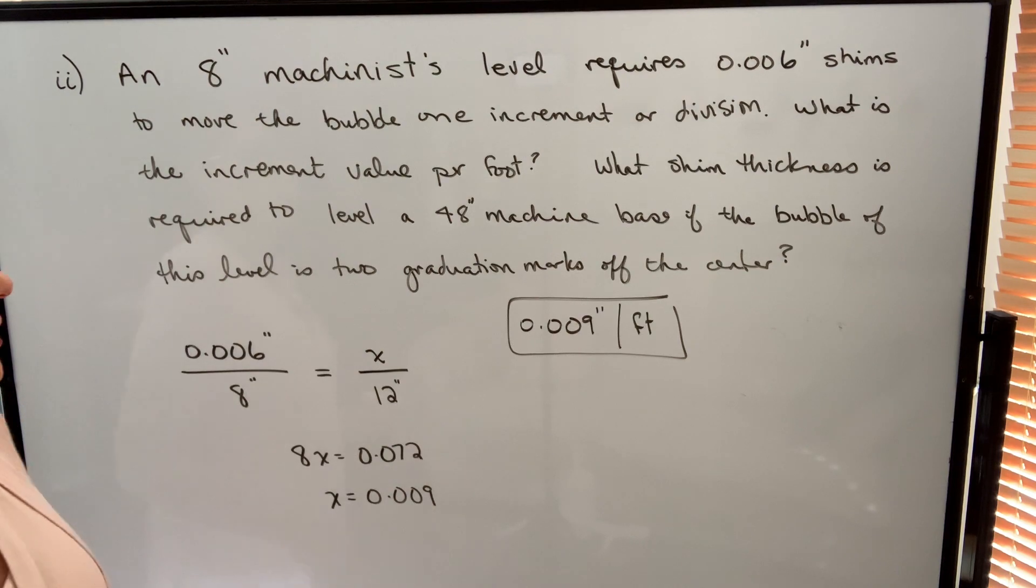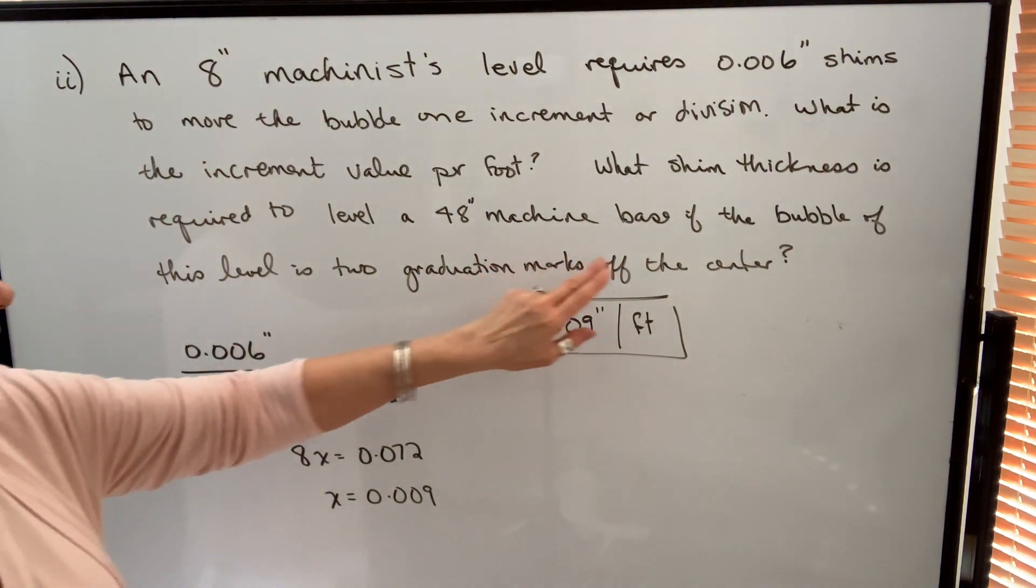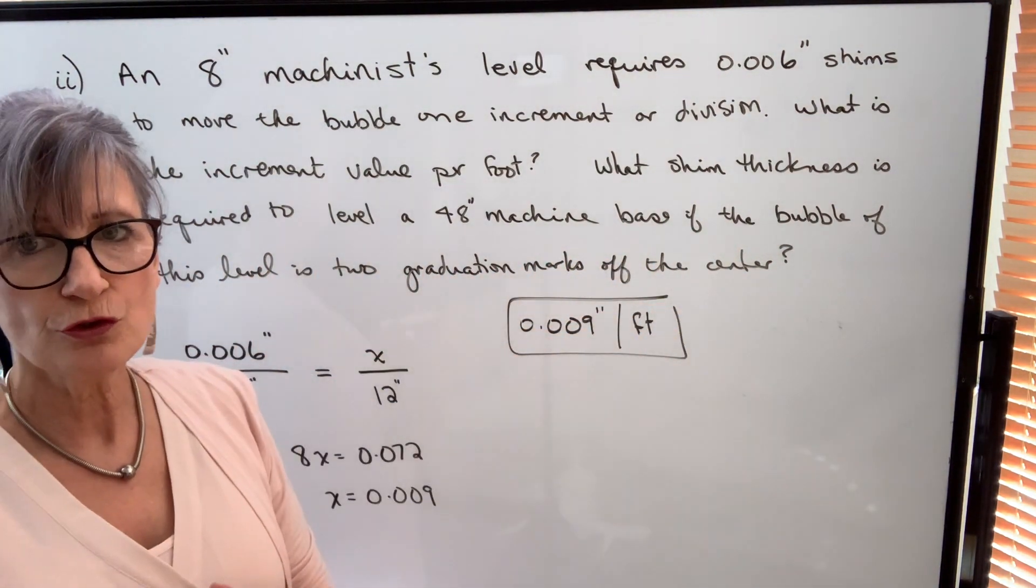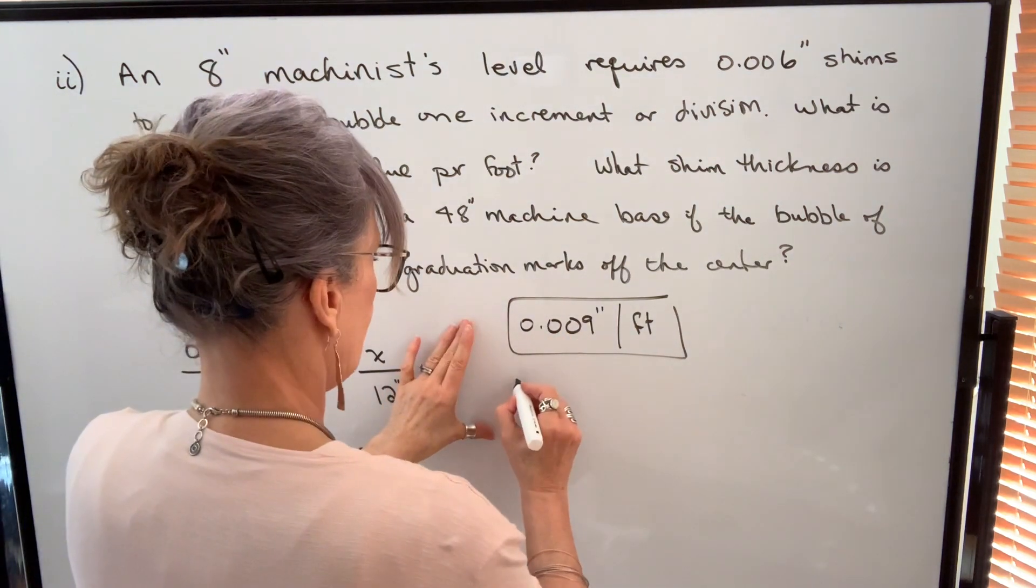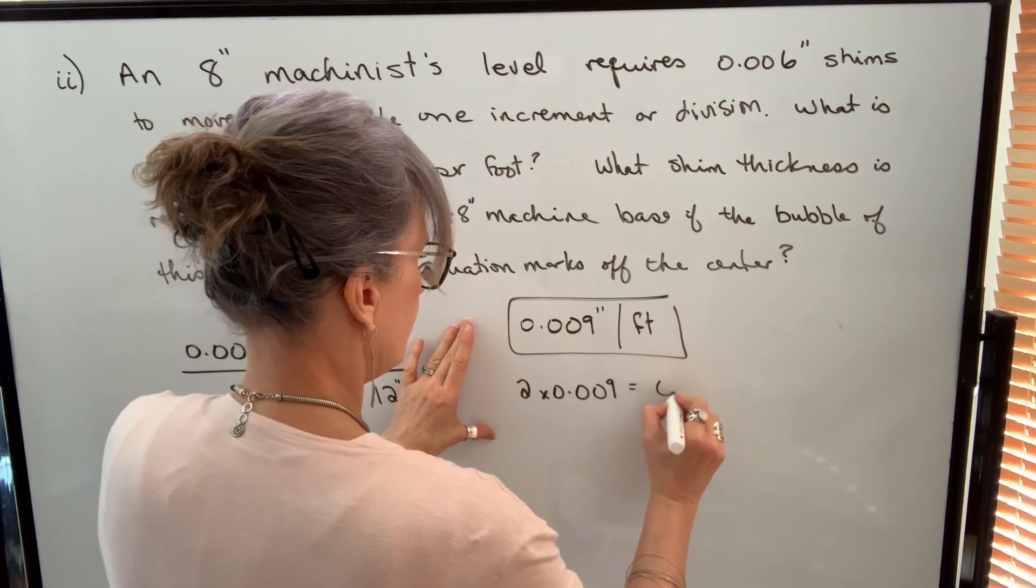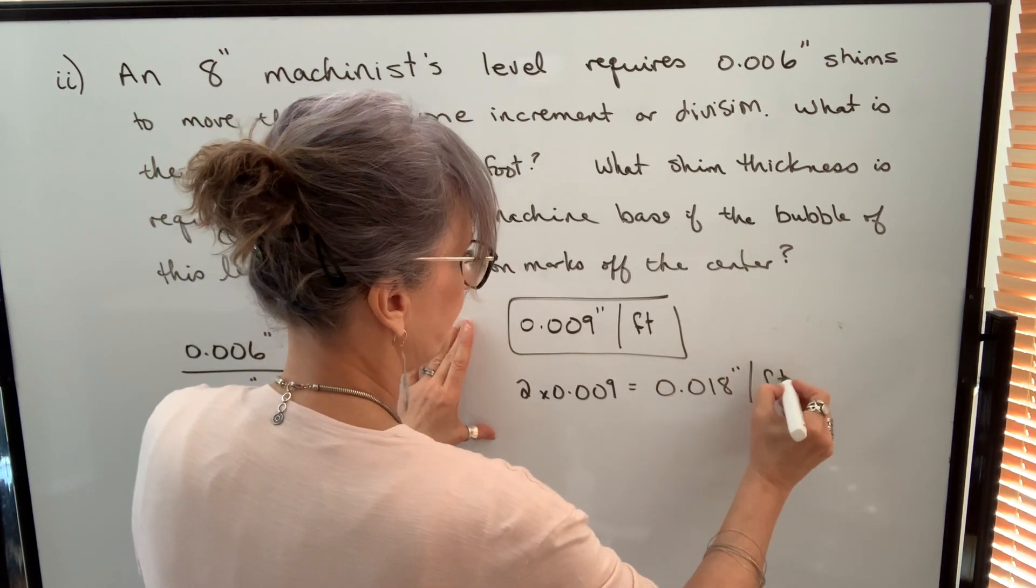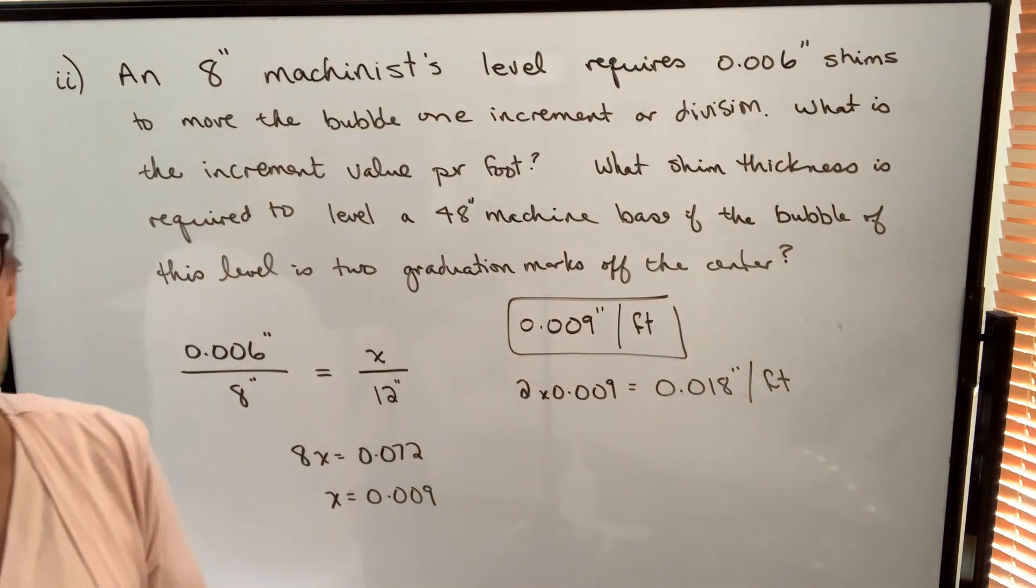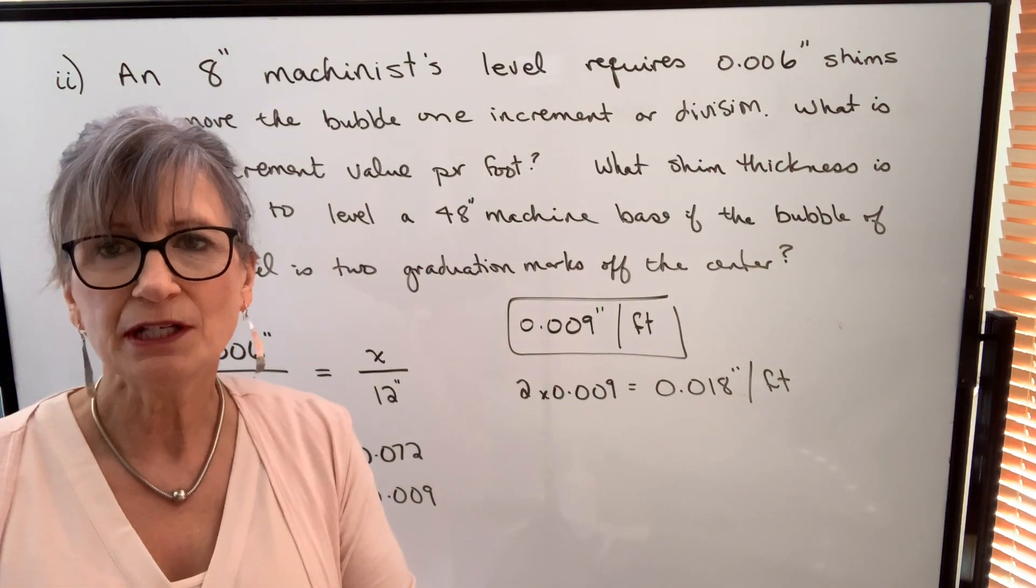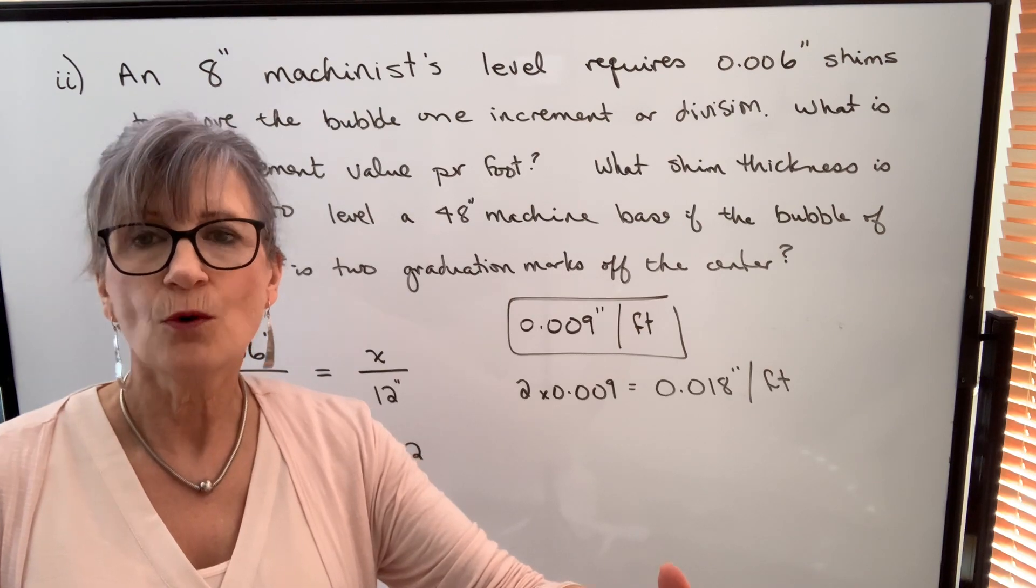Then it says what shim thickness is required to level a 48-inch machine base if the bubble of this level is two graduation marks off the center. So if it's two graduation marks off center, it will be two times this amount. So it will be out 18 thousandths of an inch per foot. I now want to know how much it would be out over the total machine base length, which is 48 inches or four feet.